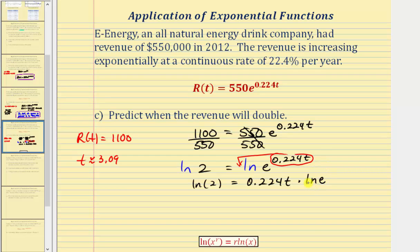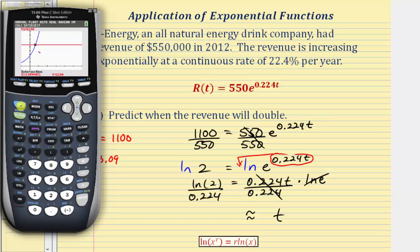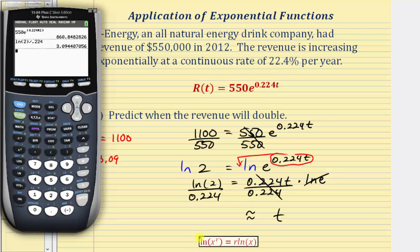To solve for t, divide both sides by 0.224. Notice that natural log 2 divided by k gives us the doubling time. Back on the calculator home screen, enter natural log 2, close parenthesis, divided by 0.224, and press enter. This gives approximately 3.09 — the same value found graphically.